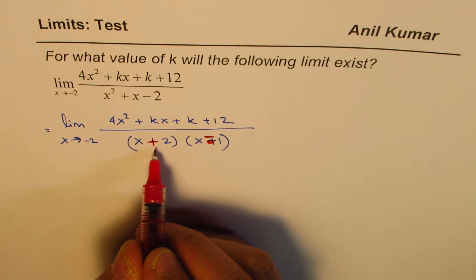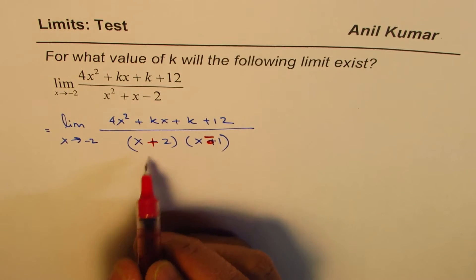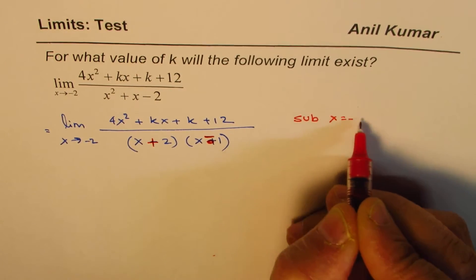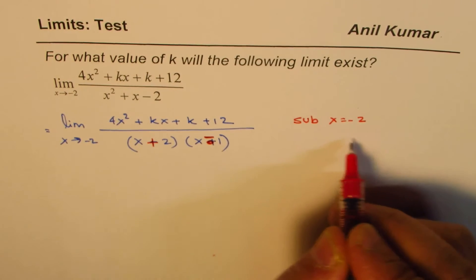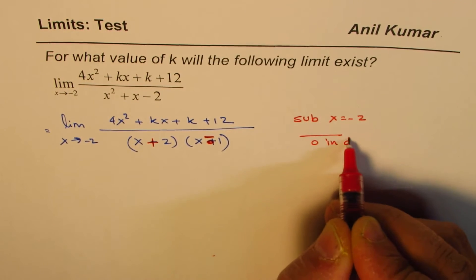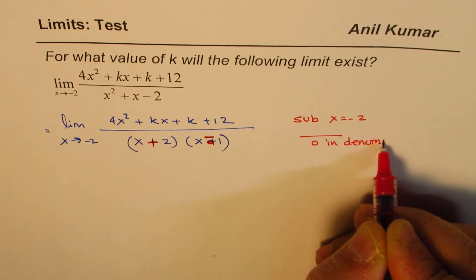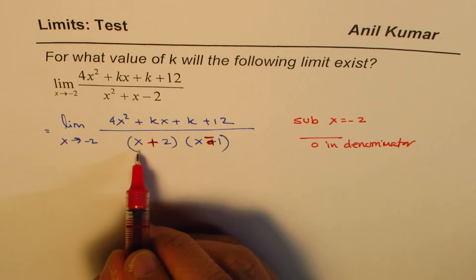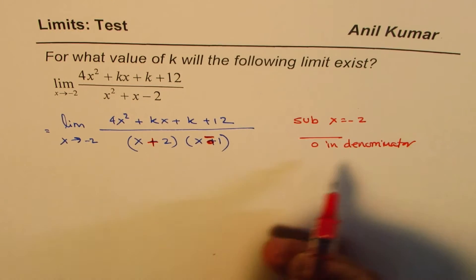So if I substitute minus 2 here, then what happens? As soon as you substitute x equals minus 2, you get 0 in denominator. So I factored just to show you that if I write minus 2 here, it becomes 0.